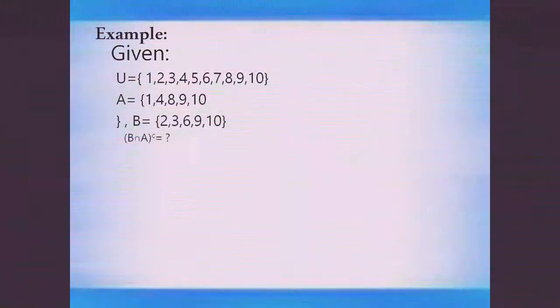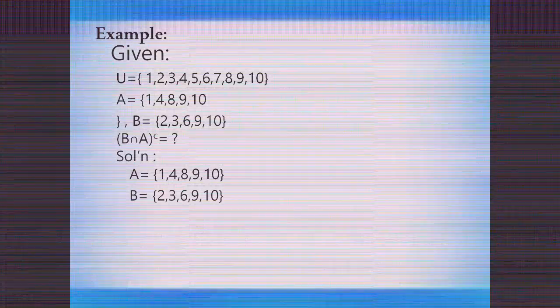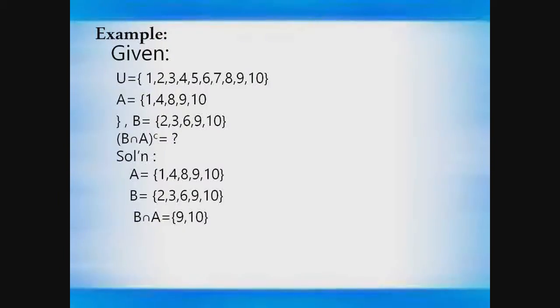Next and last example, using the same given sets. Find the complement of B intersection A. First, identify the elements of set A and set B, then look for their intersection — the elements common to both sets — which is 9 and 10. So B intersection A = {9, 10}. Now find the complement of B intersection A. Since the complement is the set of all elements in the universal set not belonging to the given set, the elements are 1, 2, 3, 4, 5, 6, 7, 8. That is the complement of B intersection A.